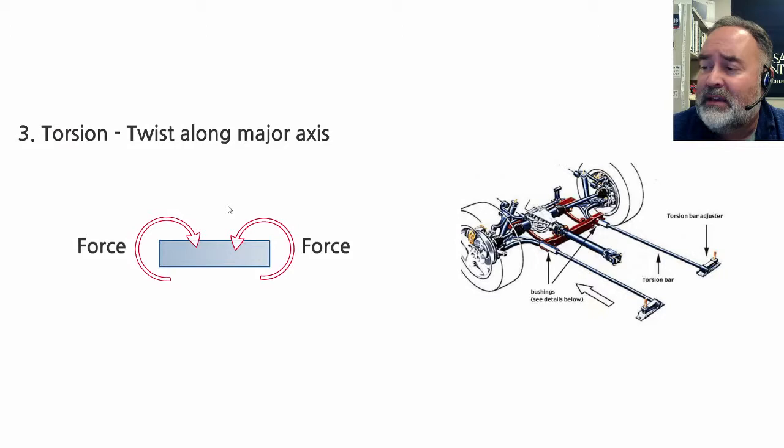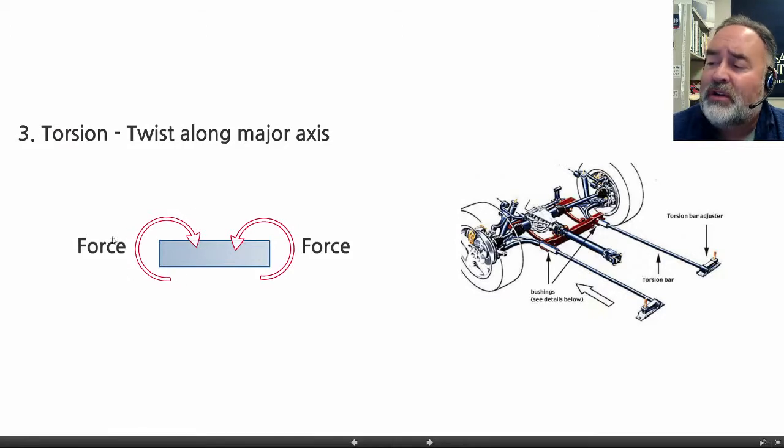So that's torsion. Twist is one force going one direction and the other force going the different direction on the same axis. So you can see here what I tried to show was twisting in one direction on this side of this item, twisting in the other direction on this side of the item. And of course, that induces a different type of stress inside the material.